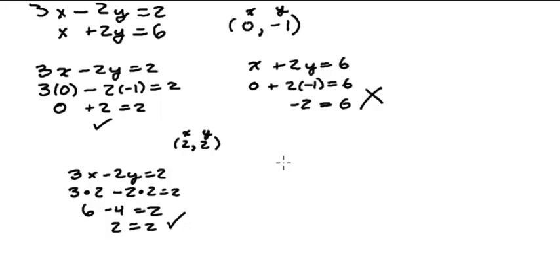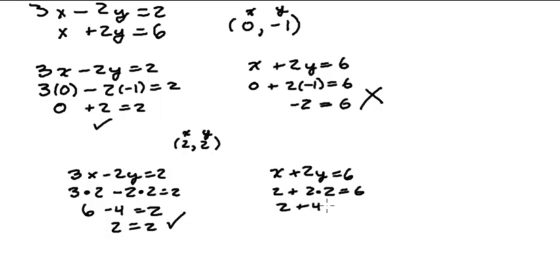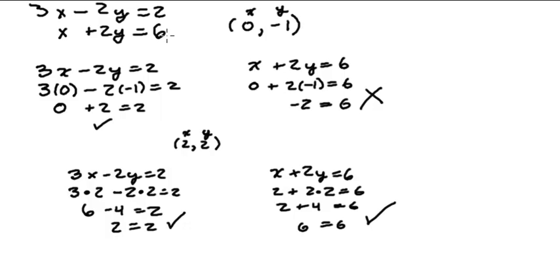Now let's check the second equation: x plus 2y equals 6. Putting in 2 for x and 2 for y gives 2 plus 4 equals 6, or 6 equals 6 — that checks out. So (2, 2) is a solution to both equations, meaning it's a point on both lines, and therefore it must be the point where these two lines intersect.